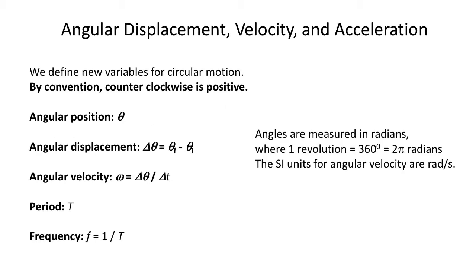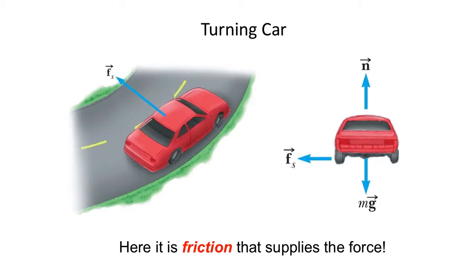Just quickly reviewing angular displacement, velocity, and acceleration — we'll dig back into this on Friday. In circular motion, we use a different coordinate called the angle theta. It rotates from the positive x-axis counterclockwise in the positive direction. We talked about angular displacement, angular velocities, the period — the time it takes to get around one full cycle — and the frequency, the time per period. We still have some fundamental physics to understand before we get into that.